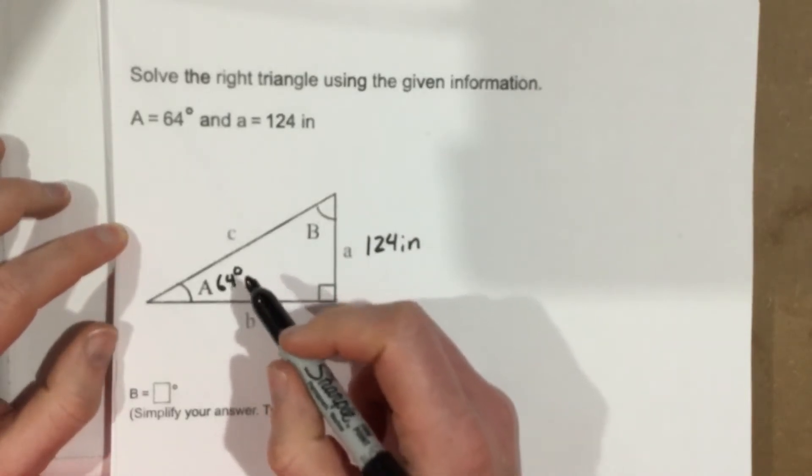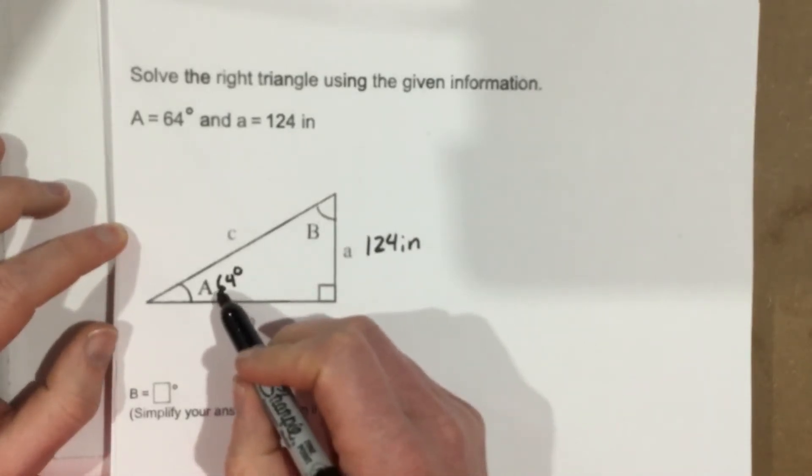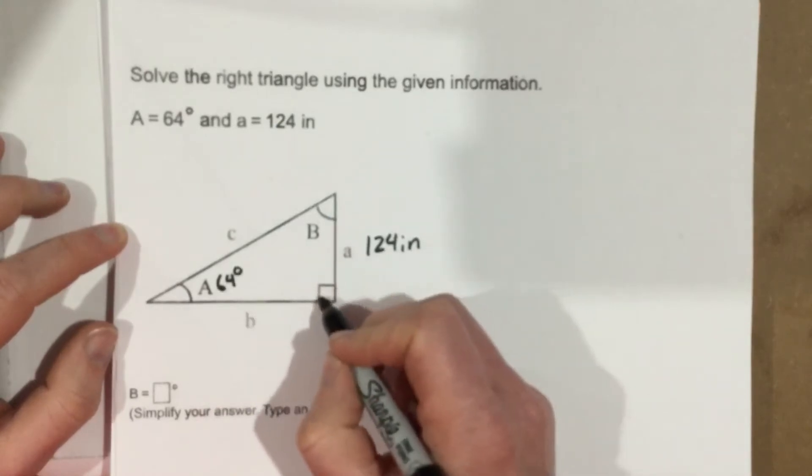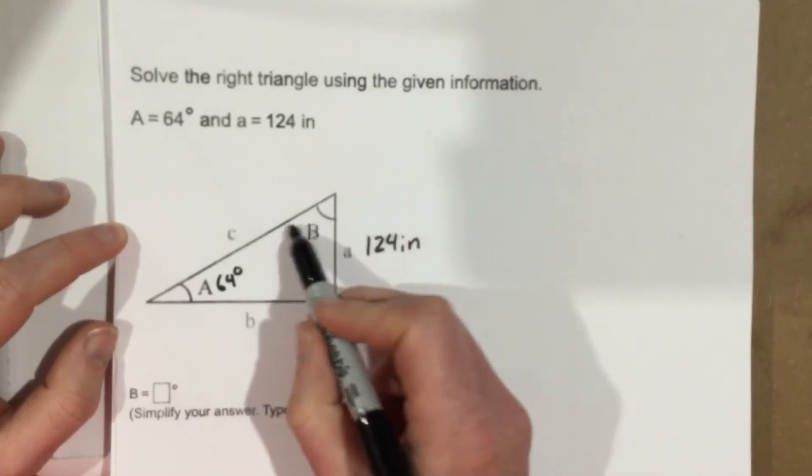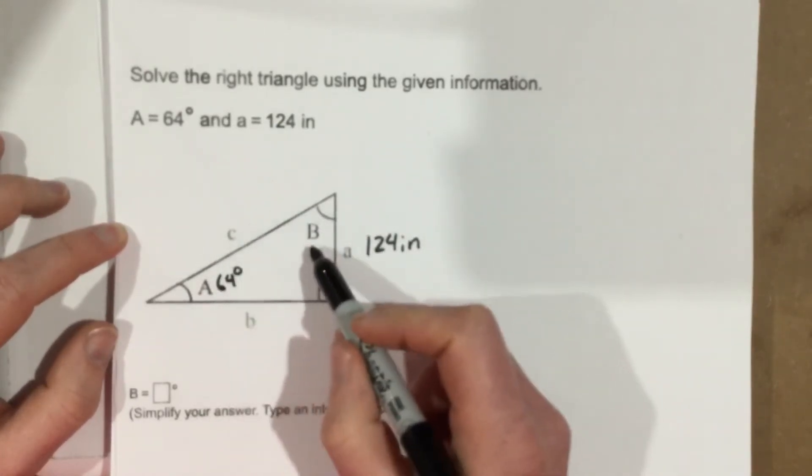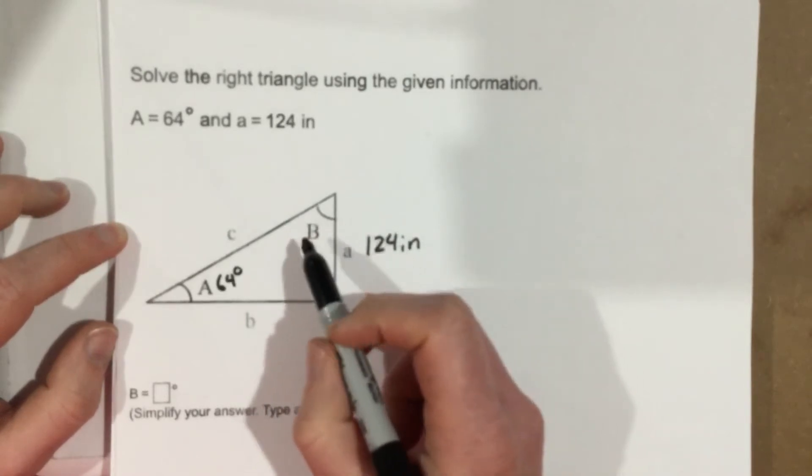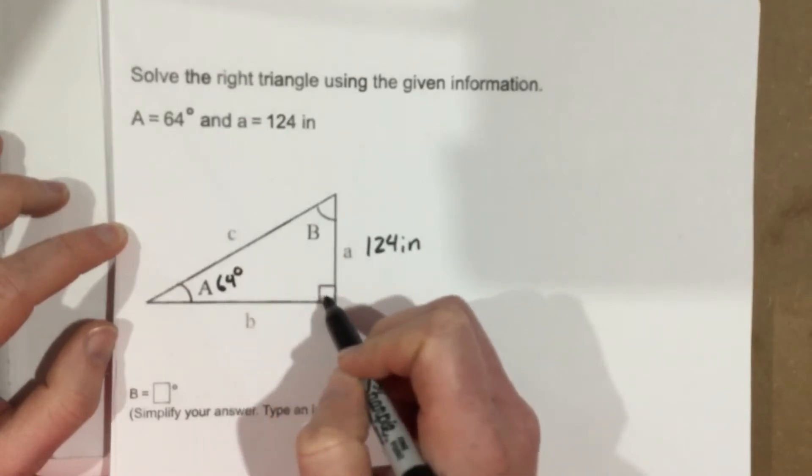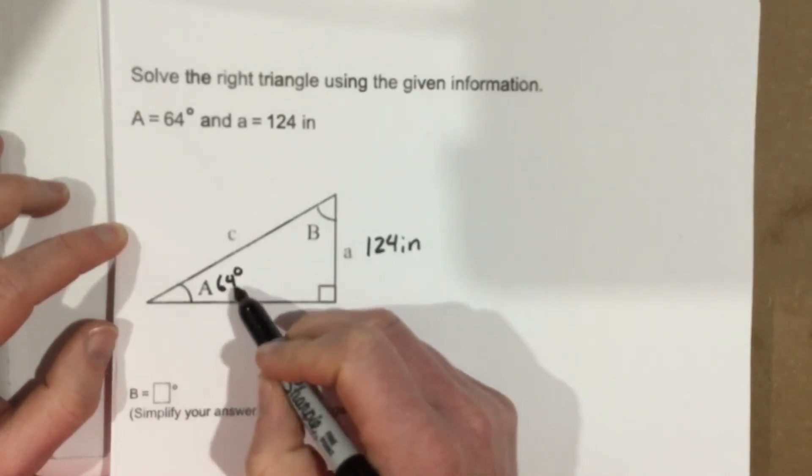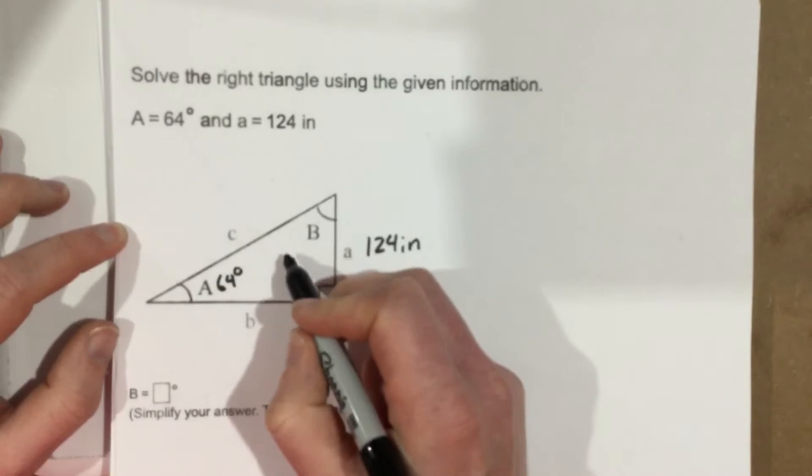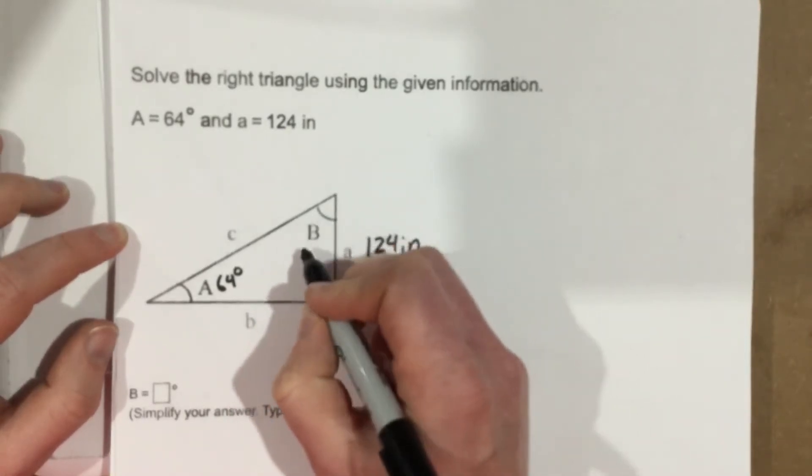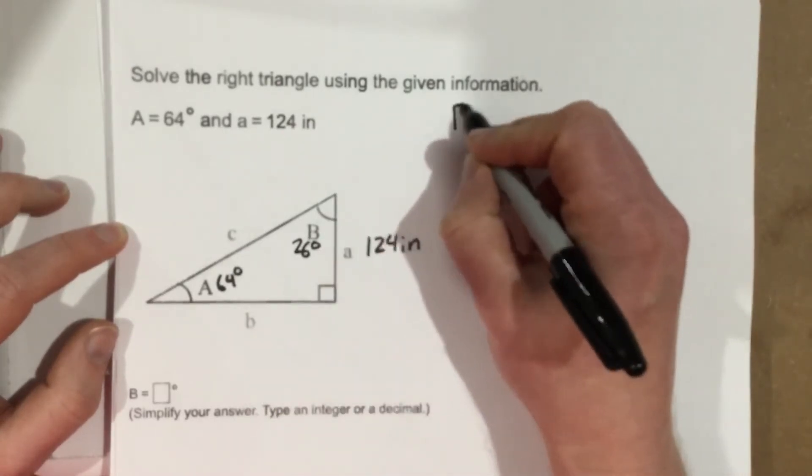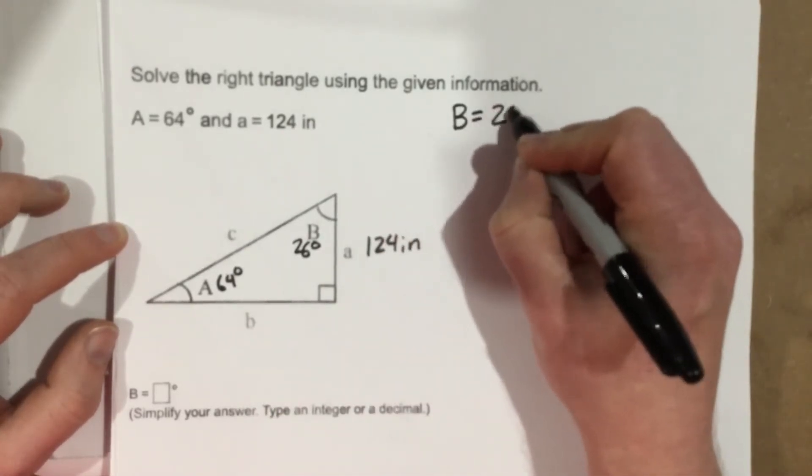Well I know if I have an angle of 64 degrees and this is an angle of 90 degrees, I know a triangle has a total amount of degrees of 180, so I can take basically 180 minus 90, which is 90, and then 90 minus 64, and 90 minus 64 gives you 26. So 26 degrees is what B is. So we can write up here that B is 26 degrees.